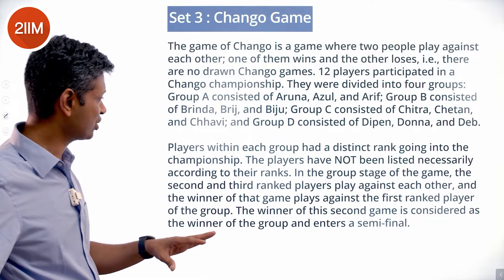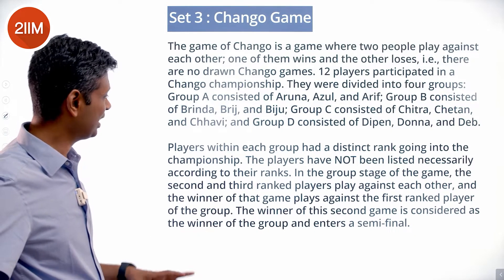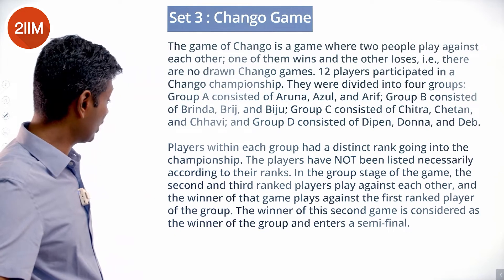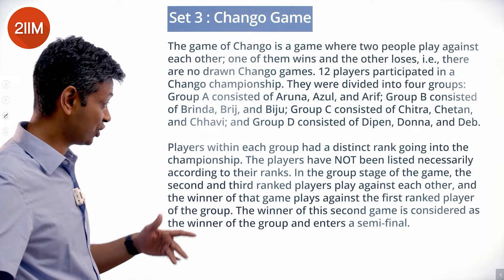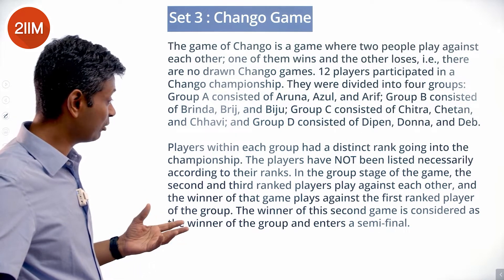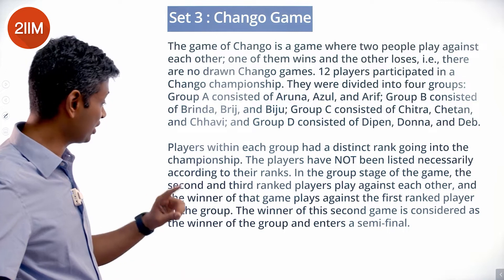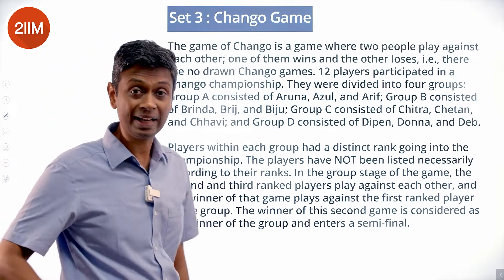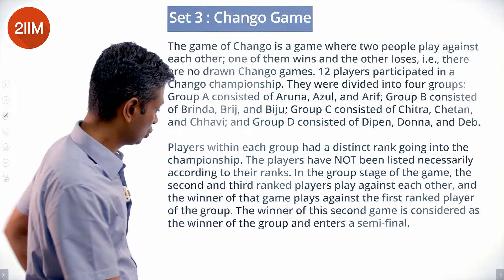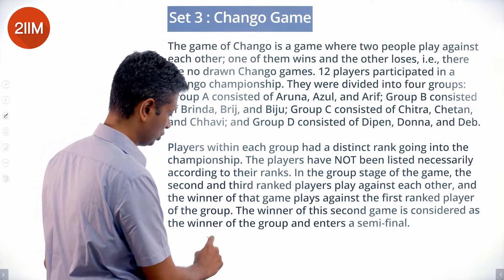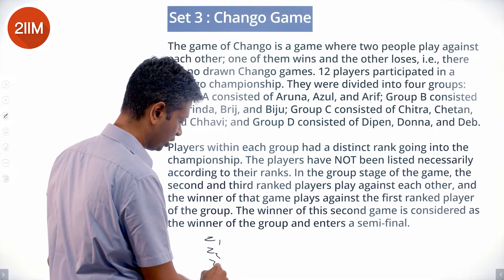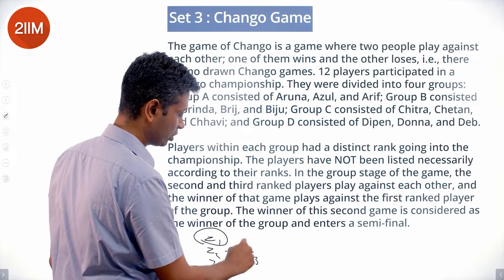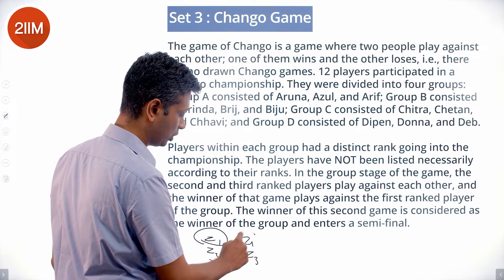The players have not necessarily been listed according to their ranks. In the group stage, the second and third ranked players play against each other. The winner of that game plays against the first ranked player. The winner of this second game qualifies as the group winner and enters the semi-final.